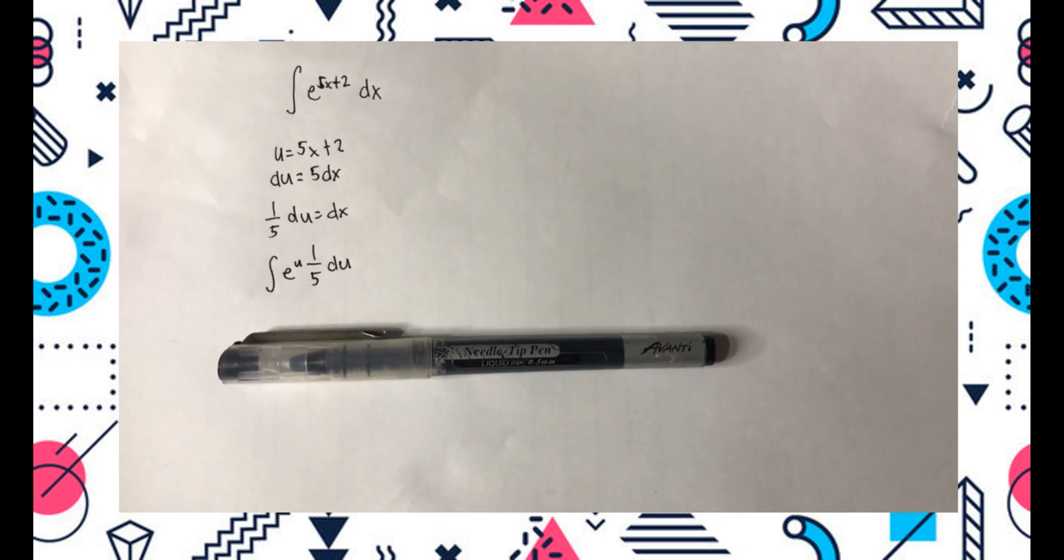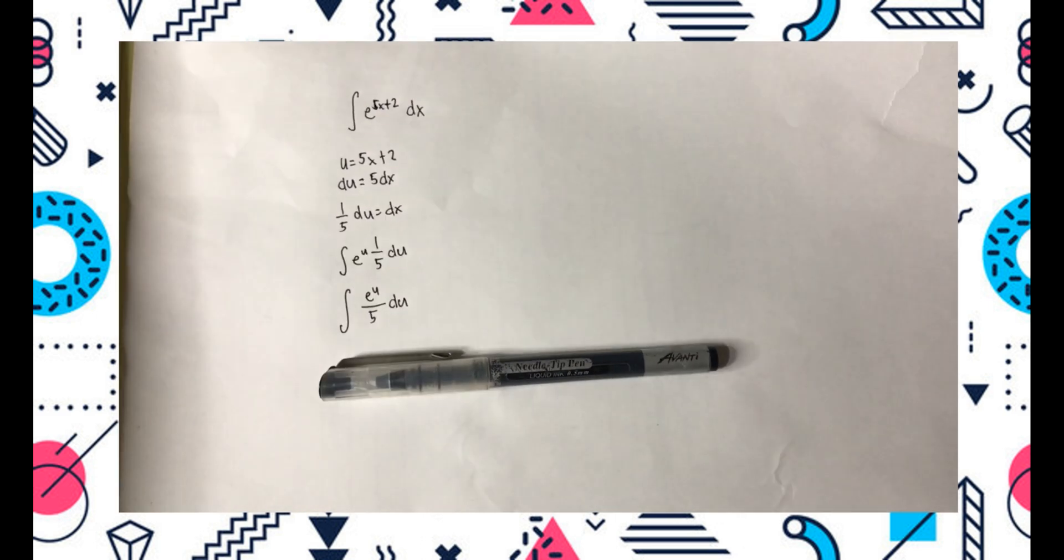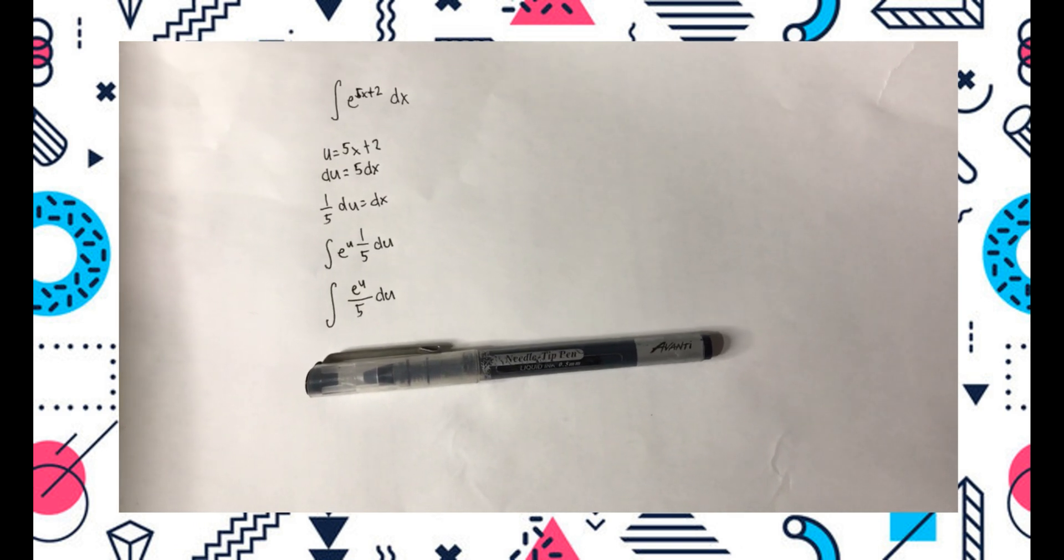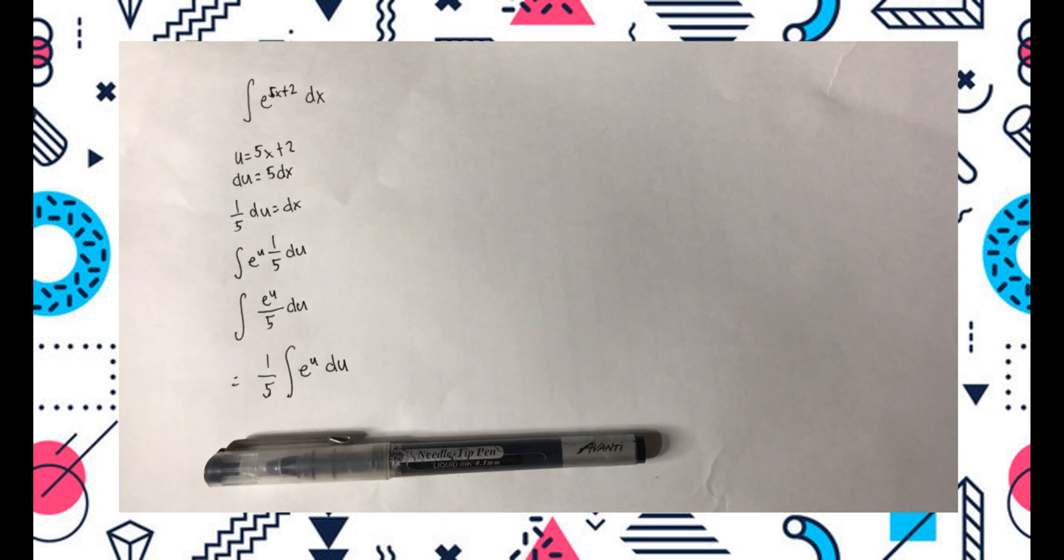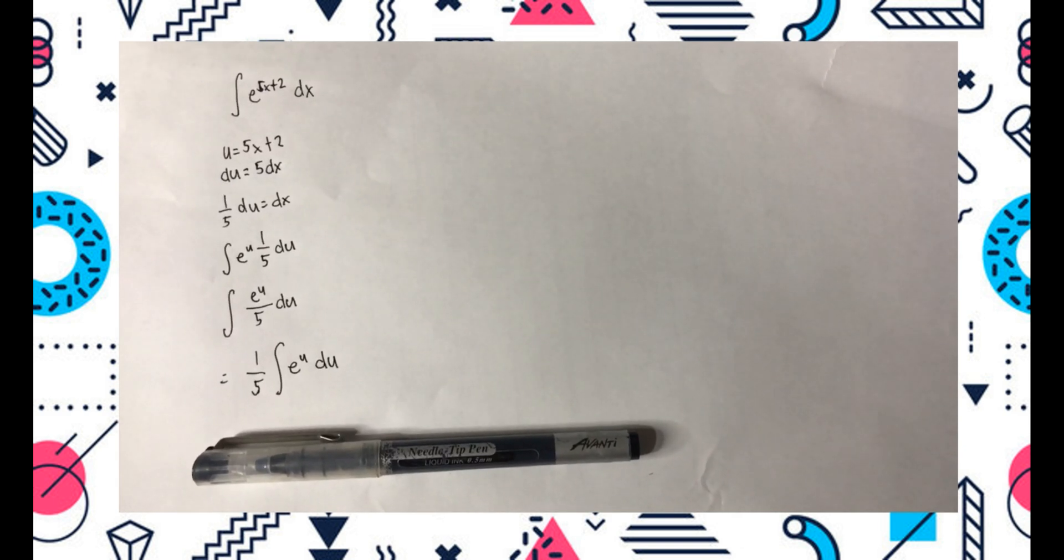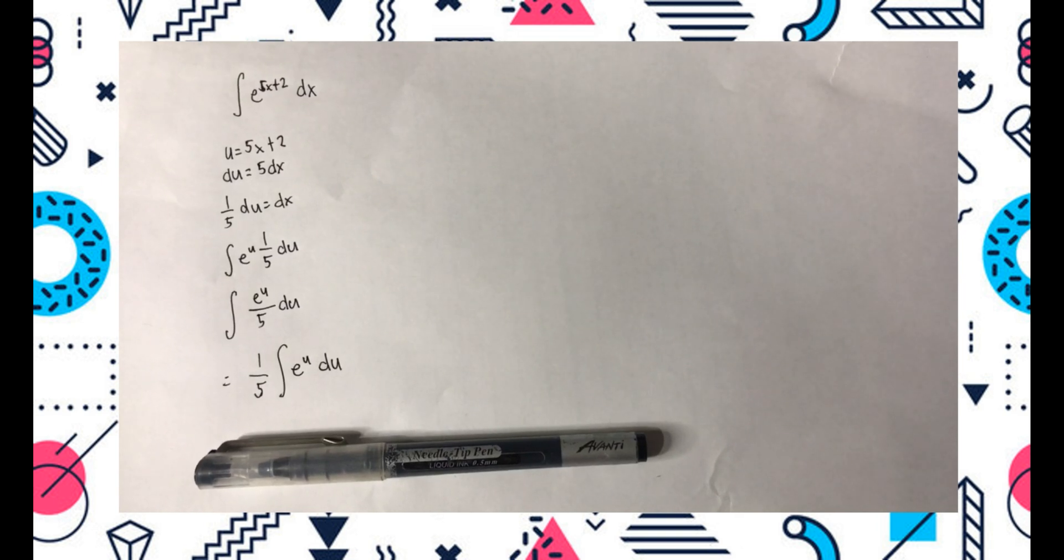Rewrite the problem using u and du. Next step is combine e raised to u and 1 over 5. Since 1 over 5 is a constant with respect to u, move 1 over 5 out of the integral, so that 1 over 5 integral e raised to u du.